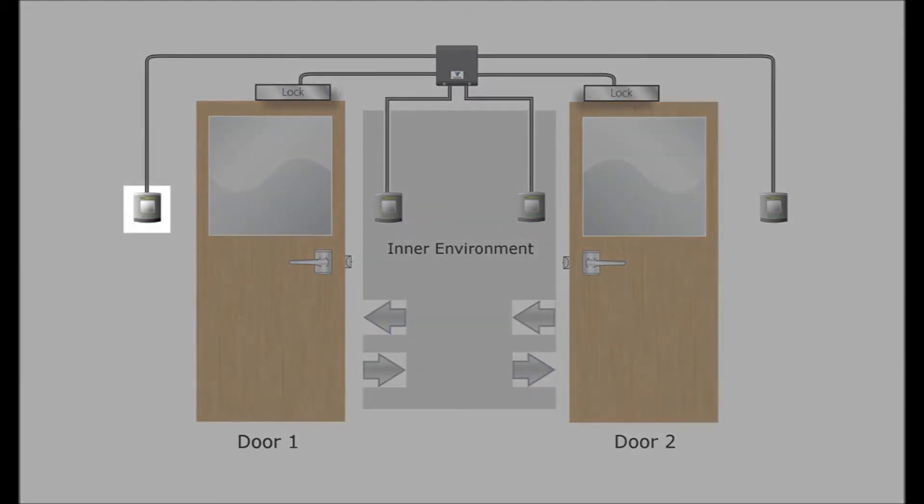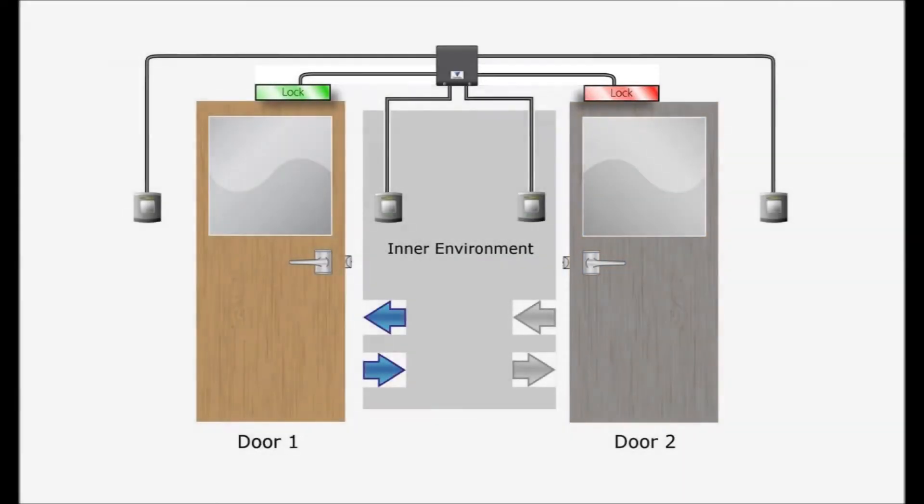The system follows the sequence: first of all, to request to open a door, the switch on the contact for door one is closed. The system reads the status of door two and understands that it is in the closed position, and that will accept the door request and energize the lock-out relay. Door one is now accessible.